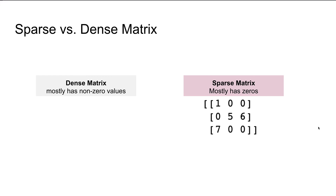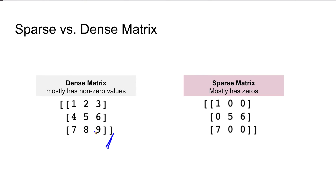A sparse matrix is a matrix that has lots of zeros in it. As you can see on this slide, we have a dense matrix on the left-hand side and a sparse matrix on the right-hand side. The dense matrix has no zeros, or very few, while the sparse matrix has more than 50% zeros — here we have five zeros out of nine. It's important to store a sparse matrix in a compressed format because it can save memory and expedite the processing speed of an algorithm.